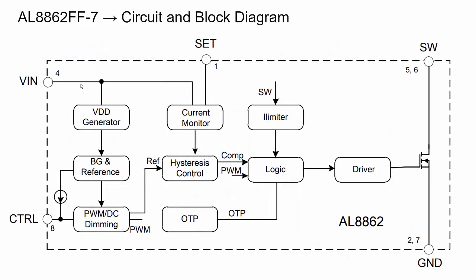Here's the block diagram of the AL8862 IC, turned 90 degrees from the previous picture. You can see the VIN and SET pins connected across RSET. There is a current monitor — really just a voltage comparator — that drives the PWM signal and its duty cycle to control a driver block, which drives the gate of the MOSFET switch, turning it on and off rapidly to control the current through the inductor. You can also see the control pin, which accepts either a PWM signal or a DC voltage for dimming.